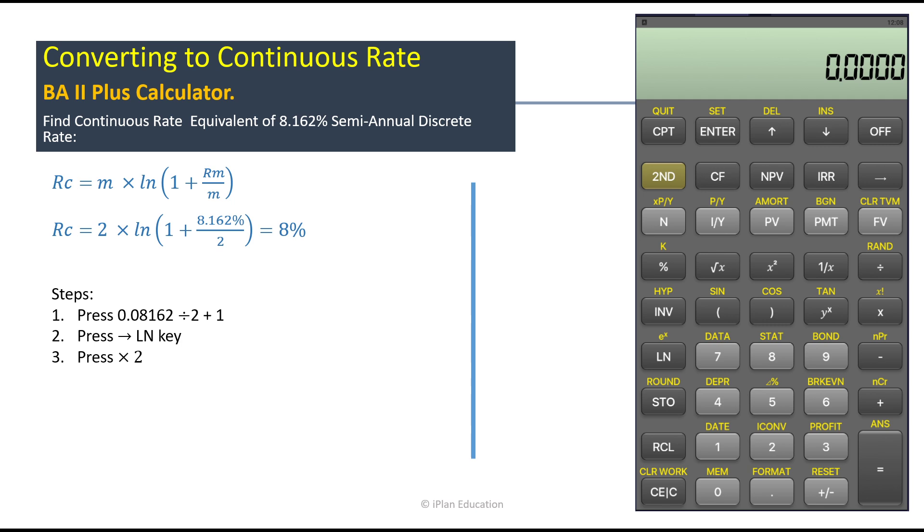So at a lower rate it gives higher interest amount. Okay, so what would be the equivalent interest rate, or what would be the equivalent continuous interest rate of 8.162% semi-annual discrete rate?